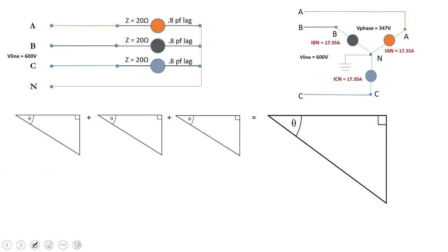Remember in Y, the rule is that V-line equals V-phase times root 3, so V-phase equals V-line divided by root 3. In this case, 600-volt line voltage gives us 347-volt phase voltage. We can then calculate the current in each phase by dividing the phase voltage by the impedance in each phase, which comes to 17.35 amps.